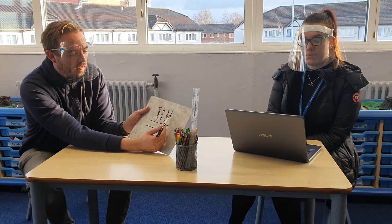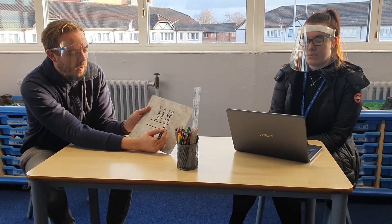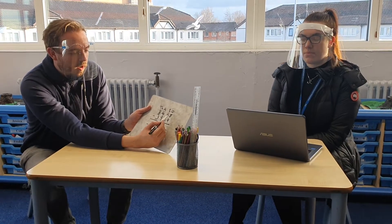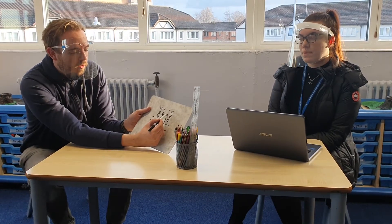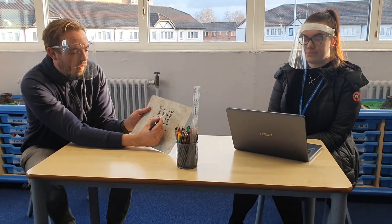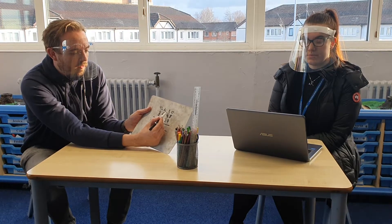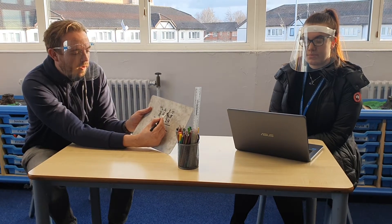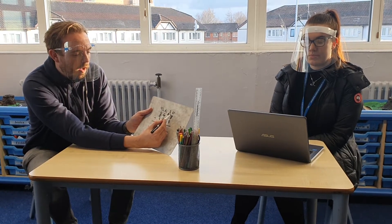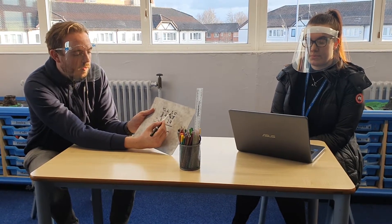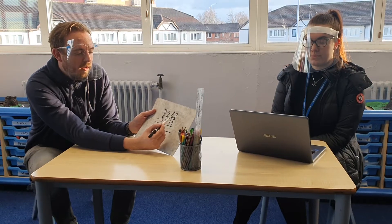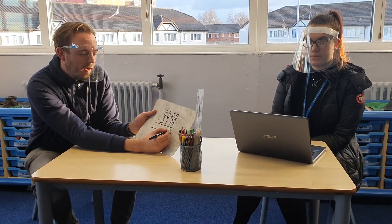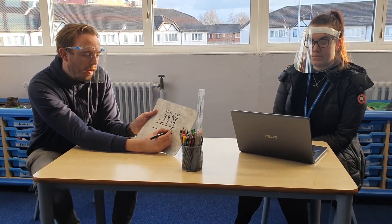So I've got eight ones take away nine ones, which I can't do. So I'm going to have to take one of the tens away from there, so that becomes three tens, and that one ten comes into the ones to make eighteen. So eighteen take away nine is nine.